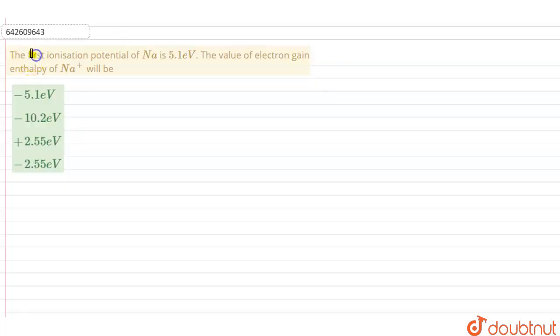The first ionization potential of sodium (Na) is 5.1 electron volts. The value of electron gain enthalpy of Na+ will be?